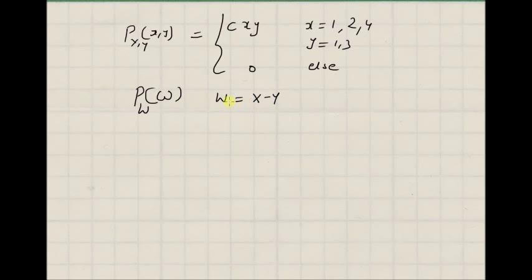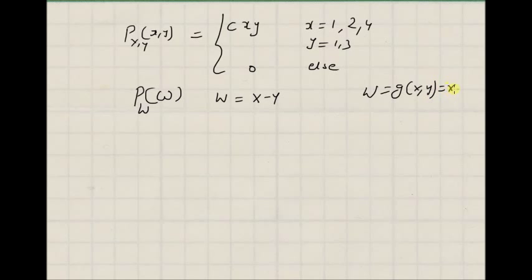This new random variable is a function of these two random variables. That is, w is equal to g(x, y), which is equal to x minus y. So this new random variable, which is a function of these two random variables, will have a new probability mass function. Our goal is to find this new PMF. Before we find the probability mass function, first we have to know what is the range of the values of w.